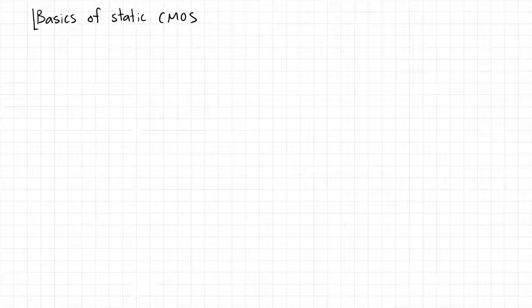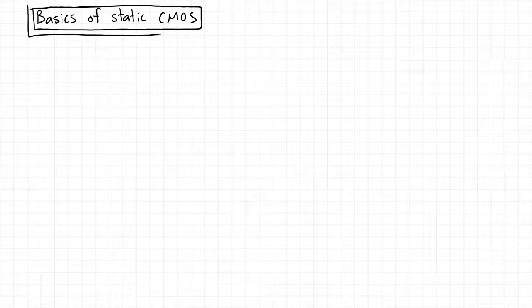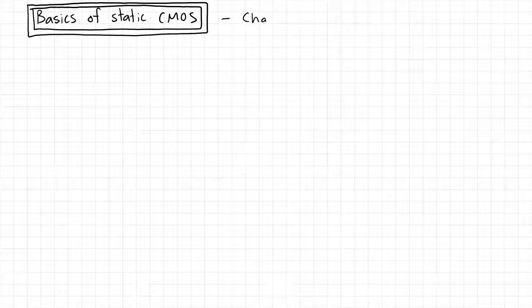Hopefully you all know what CMOS means — we've covered this in previous courses, specifically the prerequisite to this course, ECE 102. What we're going to talk about today specifically is the basics of static CMOS, as opposed to other types like dynamic CMOS, which are digital logic families we'll talk about later in the course. If you're following along at home, chapters one and two of the Weston Harris book are the ones you'll want to read.